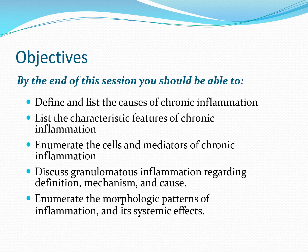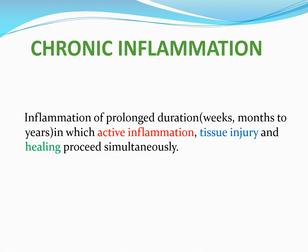Chronic inflammation is inflammation of prolonged duration — weeks to months to years. In this inflammation, active inflammation is going on, associated with tissue injury, and at the same time healing is taking place. Remember: in chronic inflammation, the active inflammation, the tissue injury, and the healing process are all occurring simultaneously. Inflammation is for protection, for degradation of dead necrotic tissue, and for destroying bacteria and microorganisms, but we pay a price in terms of host-induced tissue injury.